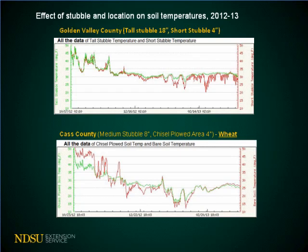Looking at data John Nowatsky has recorded: the top graph shows Golden Valley. Under short stubble, soil temperatures are less — they haven't captured as much snow. But in general, none of those temperatures are below the critical level for winter kill. In Cass County, the bottom graph shows some soil temperatures at about one inch depth — where the crown would likely be — down to 10 degrees. But probably because of snow cover, temperatures in these areas haven't been excessively low, so we don't need to be too concerned about winter kill yet.